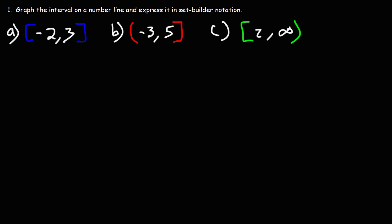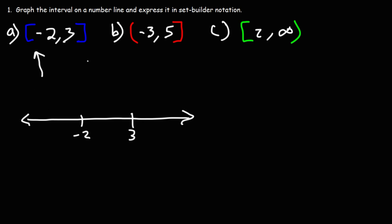Let's start with part A: graph the interval on a number line and express it in set builder notation. Here's the number line. Here's negative 2, and this is 3. We have brackets, so we're going to have a closed circle at negative 2 and 3. And x is going to be between these two values.